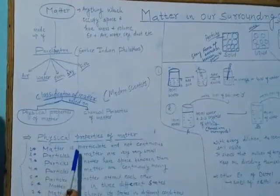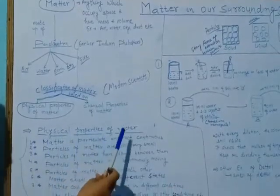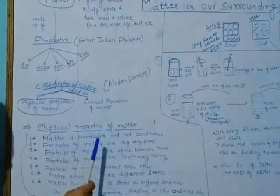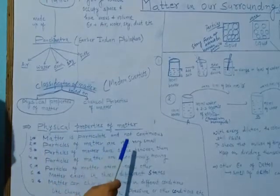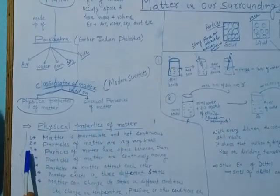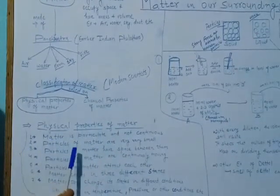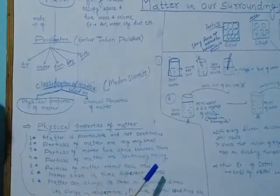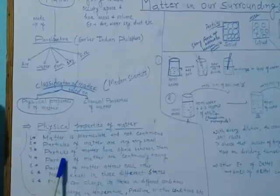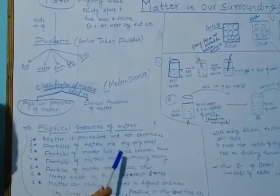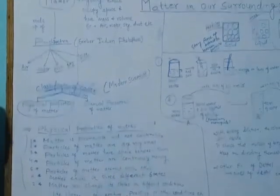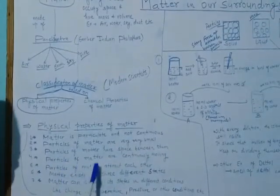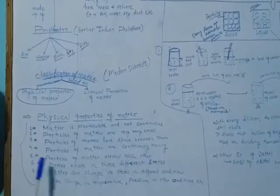We will discuss point-wise what the physical properties of matter are. First, matter is particulate and not continuous. Second, particles of matter are very, very small. Third, particles of matter have space between them. Fourth, particles of matter are continuously moving.